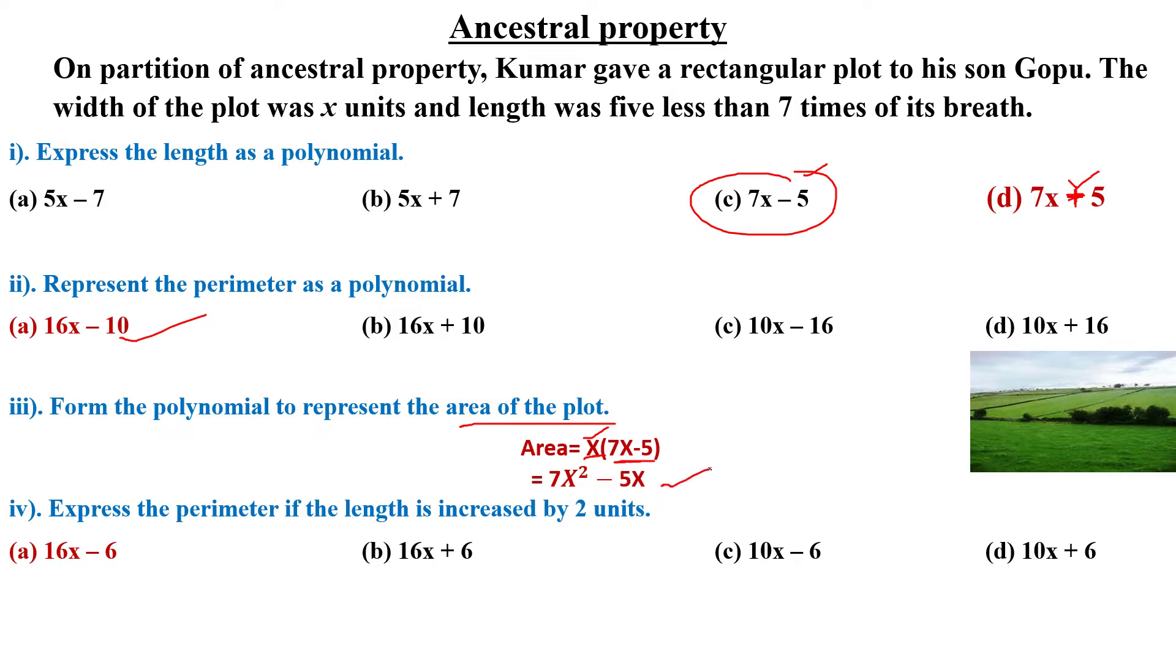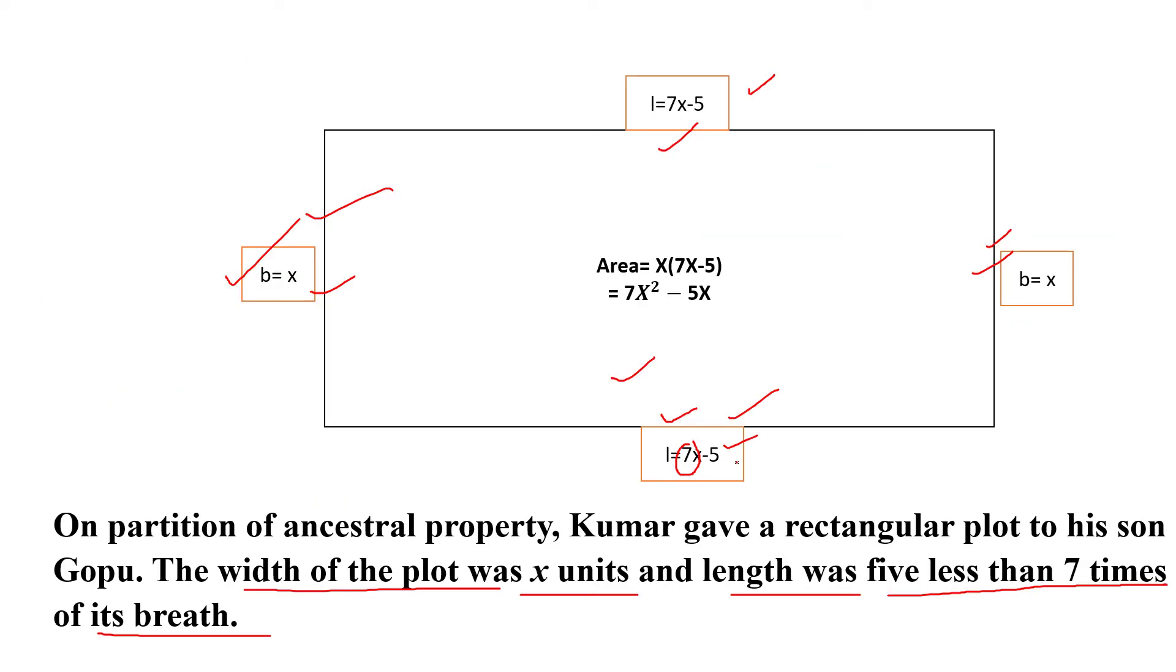Express the perimeter if the length is increased by two units. When you increase the length by 2 units, the new length will be 7x minus 3. The new perimeter will be 2 times (7x minus 3 plus x), which simplifies to 16x minus 6.